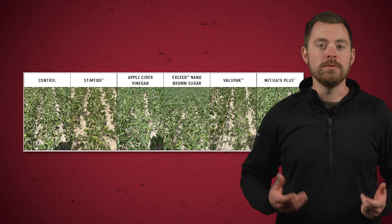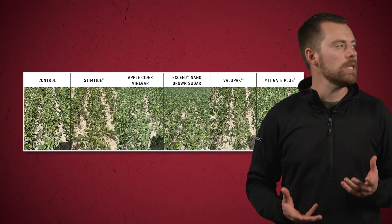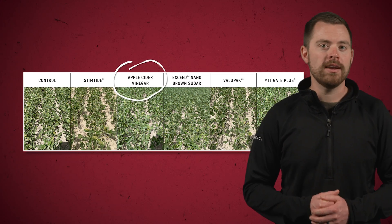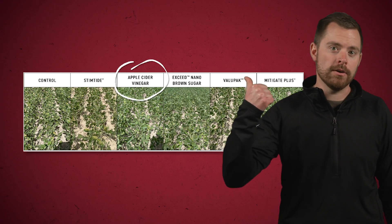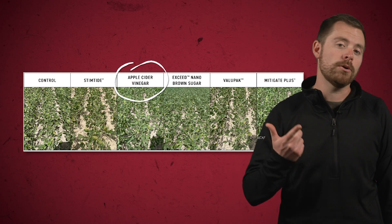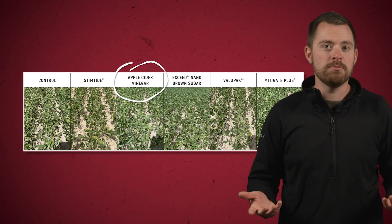Exceed Nano Brown Sugar is a pretty cheap product and a lot of growers throw it in anytime they're making a trip across the field with the sprayer because it helps mitigate stress in the plant. Now you might notice there's a product on the list that seems a little unconventional — apple cider vinegar. We actually drove down the road to Dollar General, bought a couple gallons of apple cider vinegar, used it at a quart per acre rate, and we saw pretty decent results. So if you want to mess around with some stress mitigation products on your own farm for cheap, go down to Dollar General and buy yourself some apple cider vinegar.